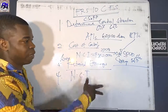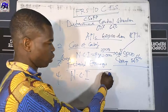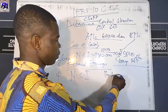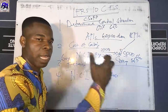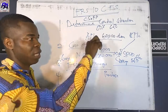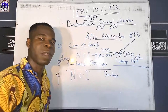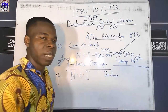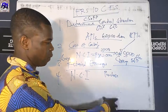We will also look at purchase consideration — the amount the acquirer or parent pays for acquiring the subsidiary. It can come in different forms: cash, share exchange, loan notes issued, or deferred payment. We will also examine how to eliminate intra-group transactions involving non-current assets, inventory, and other current assets in subsequent lessons.